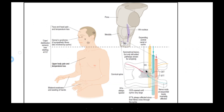Looking at this figure carefully will help us understand the clinical signs. In a patient with a cervical syrinx, the red fibers shown represent the spinothalamic tract, which crosses near the central canal of the spinal cord. So when the syrinx begins to expand, the spinothalamic tract is the first structure to be involved.